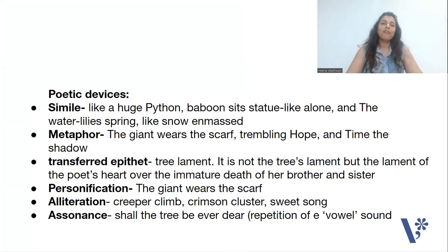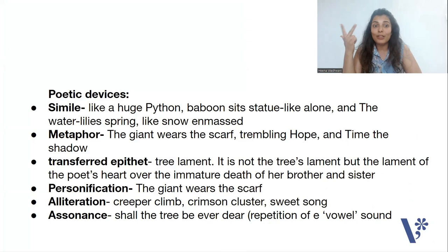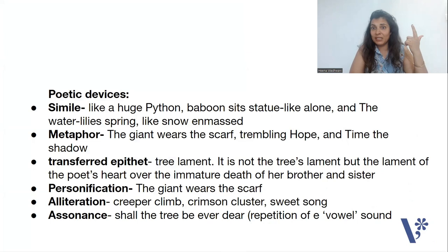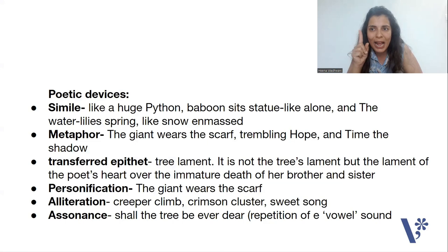A few poetic devices and figures of speech in 'Our Casuarina Tree': First, simile — examples: 'like a huge python,' 'baboon sits statue-like alone,' 'the water lilies spring like snow and mast.' These are examples of simile. Then there is metaphor also in the poem — 'the giant wears the scarf,' 'trembling hope,' 'time the shadow.' Next poetic device is transferred epithet — example: 'tree's lament.' It is not the tree which is lamenting or crying — it is the heart of the speaker, the poet, which is crying. So this is an example of transferred epithet.